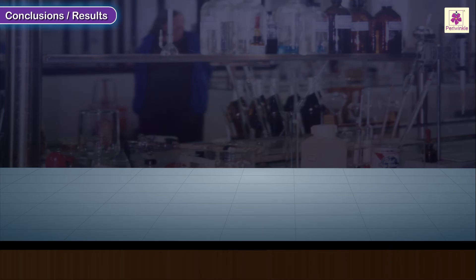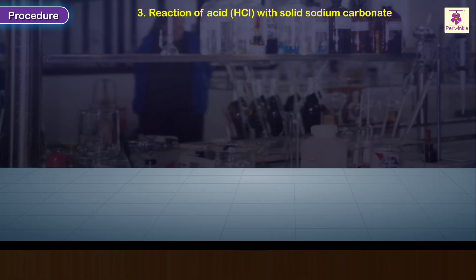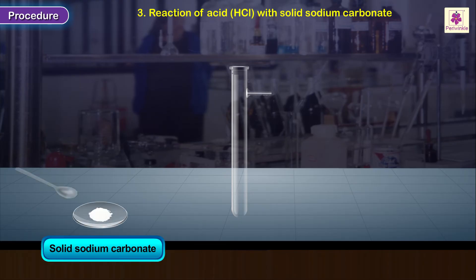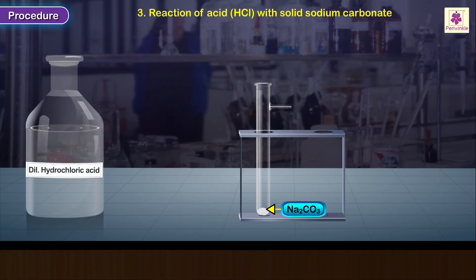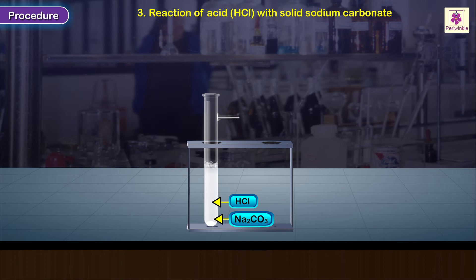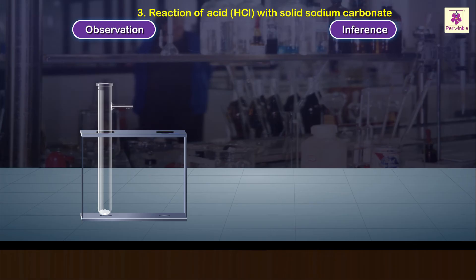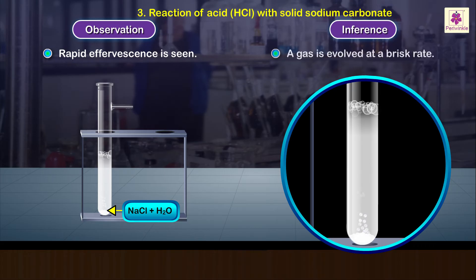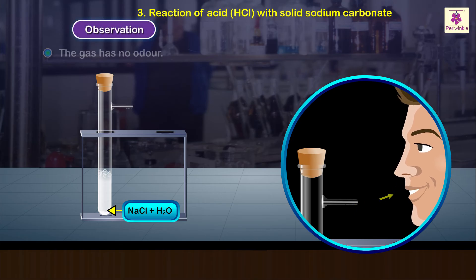Conclusions noted for the zinc reaction. Reaction with solid sodium carbonate: Take a test tube having a side tube. Place about 3 to 5 grams of solid sodium carbonate in it and place it in a test tube stand. Add about 5 to 7 ml of dilute hydrochloric acid and close its mouth with a rubber stopper. Observation: Rapid effervescence is seen, meaning a gas is evolved at a brisk rate. Smell the gas cautiously — it has no odor.